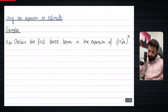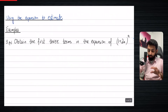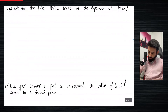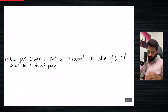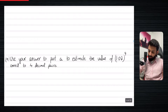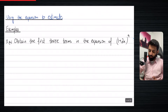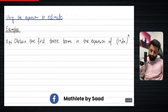And in this video, we're going to be learning how we can use the expansion to estimate the value of something. So I'll show you what part B is — it says use your answer to part A to estimate the value of 1.02 to the power nine correct to four decimal places. But of course, before we can do that, we have to do part A.